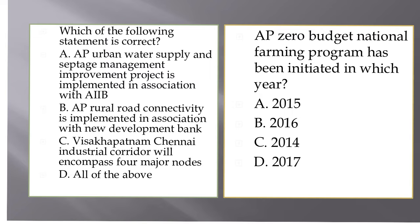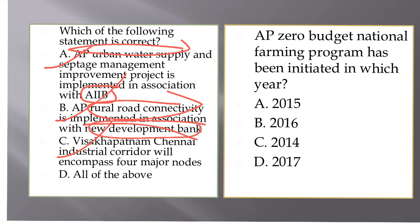Questions like this give extra information on how to utilize your socio-economic survey. All three options in this question are correct: AP Urban Water Supply supported by AIIB Bank, the Rural Connectivity Project by New Development Bank, and the Visakhapatnam-Chennai Industrial Corridor (VCIC) encompassing four node regions — which has been asked in both Group 1 and Group 2 exams. The answer for this question is D.